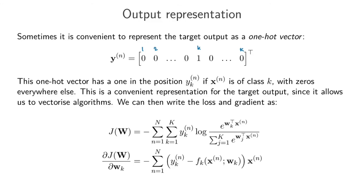Using the one-hot convention, where the kth dimension of the one-hot vector indicates class membership, you can write the loss function and gradient in a more condensed form. In the negative log-likelihood, instead of the indicator function you use the kth dimension of the one-hot vector. Similarly for the gradients, the indicator function is replaced by the corresponding one-hot dimension.